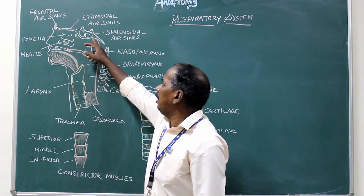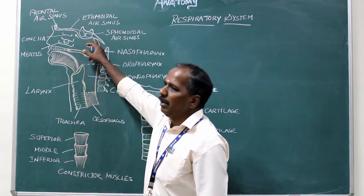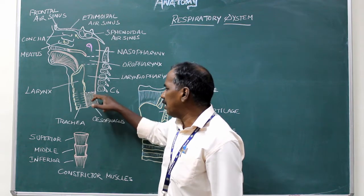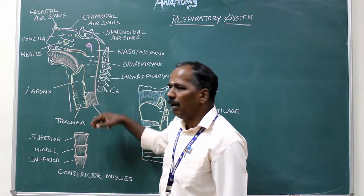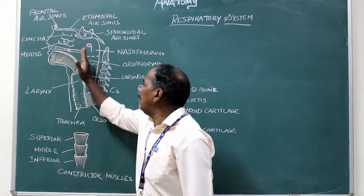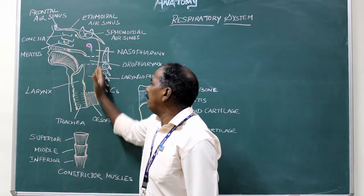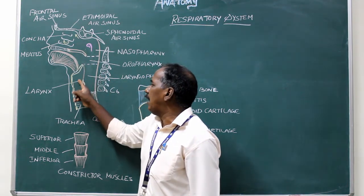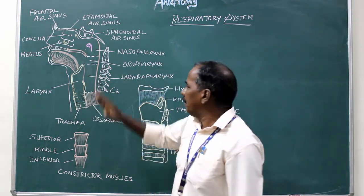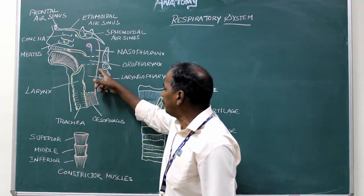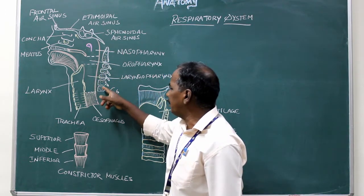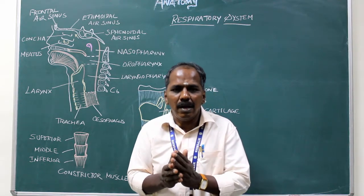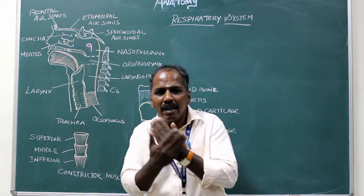Superiorly, it is attached to the base of the skull. Inferiorly, it continues as the esophagus. Anteriorly, the pharynx communicates with the nasal cavity, oral cavity, and larynx. Posteriorly, there are muscles — the paravertebral muscles and the fascia covering them.